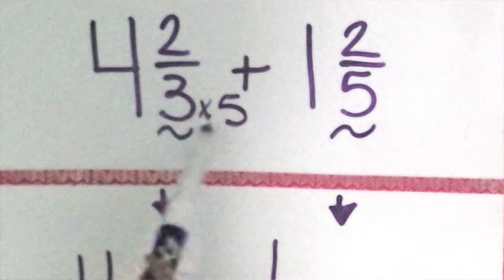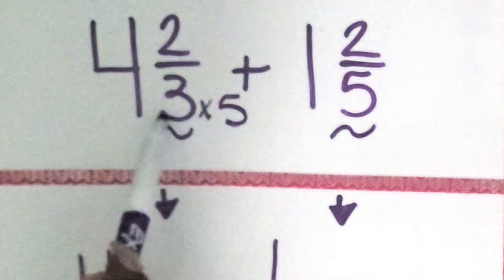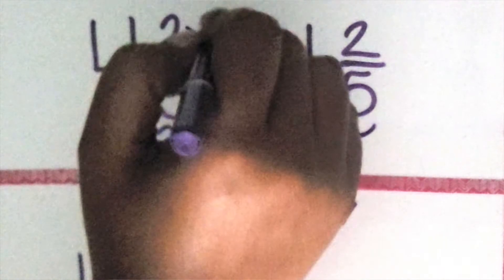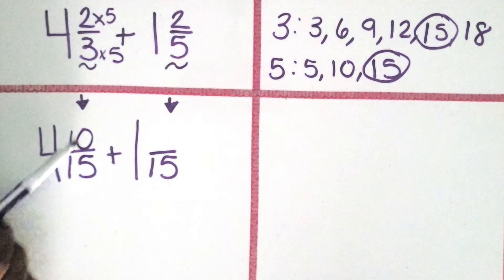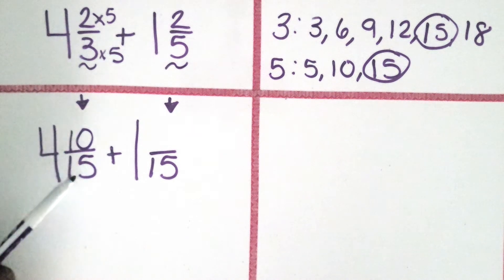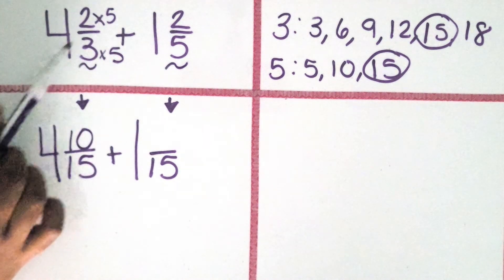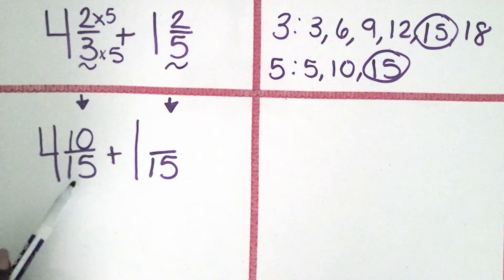There are many ways to think about it, but however you want to think about it, we have to do the same thing for the numerator. Five groups of 2 is 10. Our equivalent fraction is 10/15. We rename the mixed number 4 2/3 to 4 10/15.